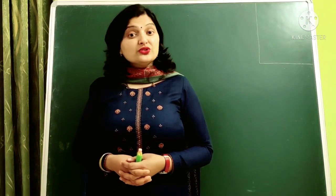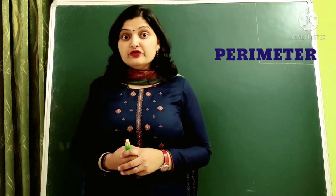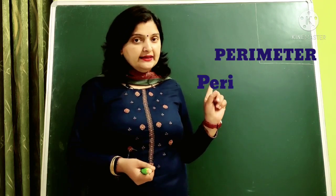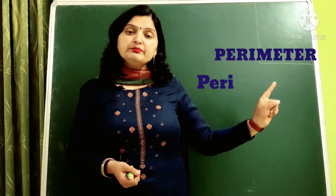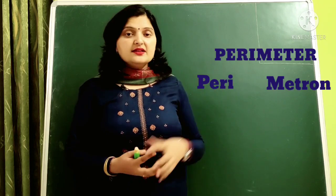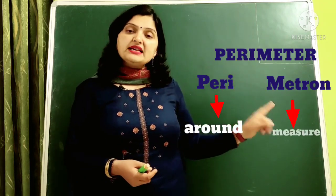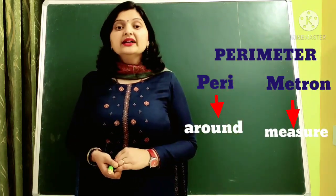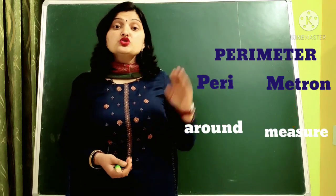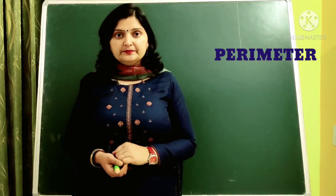The word perimeter is derived from two words: peri and mitron. The meaning of peri is 'around' and mitron means 'measure.' So the meaning of perimeter is to measure the boundary of a figure.